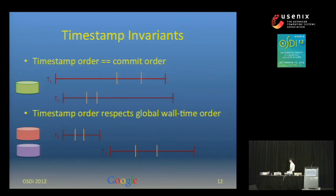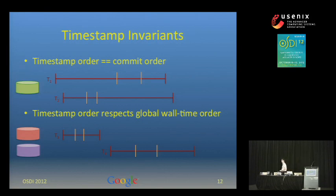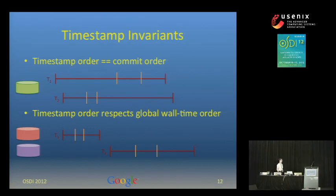That was the first condition — transforming commit order reasoning into timestamp order reasoning. The second condition is that timestamp order respects global wall clock time. Consider two transactions touching different shards that don't conflict at all, but we know T3 finished before T4 started. This is the key property of external consistency: if a transaction finishes before another one starts, the system must preserve that ordering through concurrency control. When we pick a timestamp within the lock interval, we're guaranteed that the timestamp of T3 precedes T4 by construction.